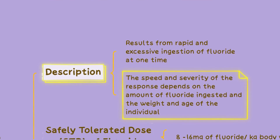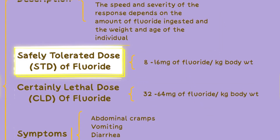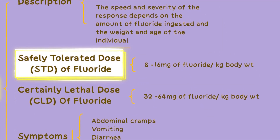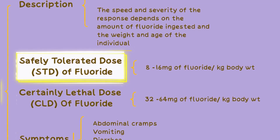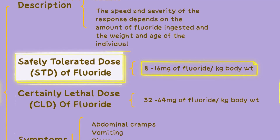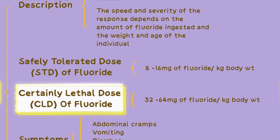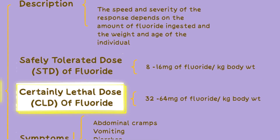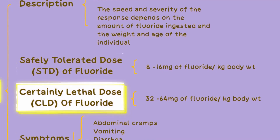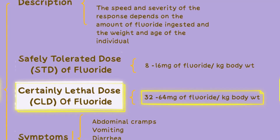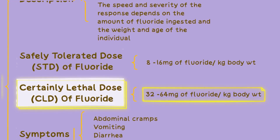There are two common measures used when discussing acute fluoride toxicity. The first is safely tolerated dose or STD of fluoride, which refers to the amount of fluoride that can be safely ingested without causing harmful effects. It is estimated to be between 8 to 16 mg of fluoride per kilogram of body weight. The other is certainly lethal dose or CLD, estimated to be between 32 to 64 mg of fluoride per kilogram of body weight.